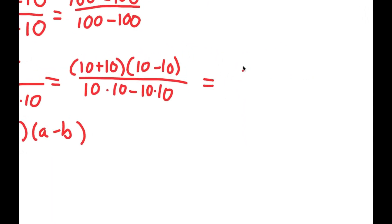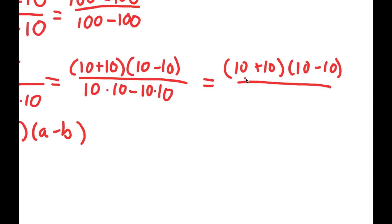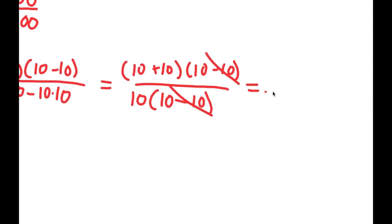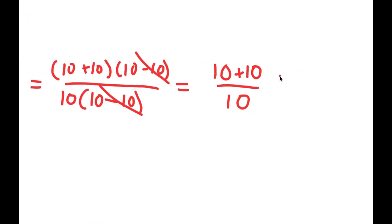So I have 10 plus 10 times 10 minus 10 over 10 times 10 minus 10 times 10. For the denominator, I factor out 10 to get 10 times 10 minus 10. Now I cancel out the 10 minus 10 from the numerator and denominator, and I'm left with 10 plus 10 over 10.